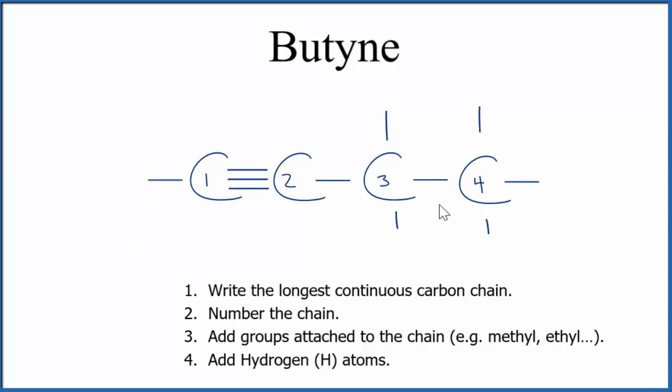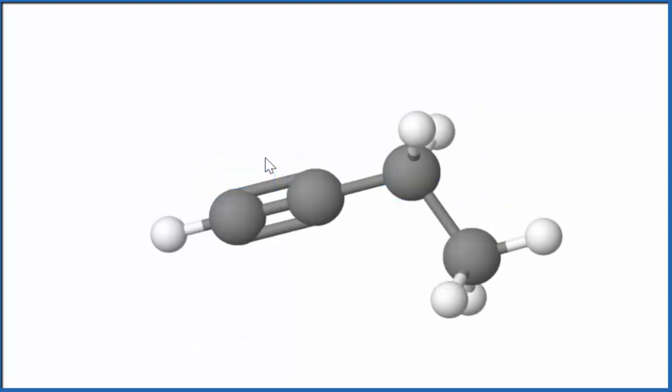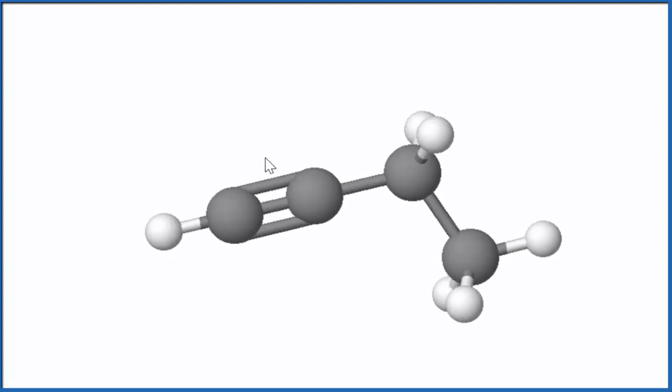This is just called normal butyne or 1-butyne because the triple bond's on the first carbon here. Let's look at this in three dimensions. So we have our triple bond here. We have one, two, three, four carbon atoms. And you can see it's linear across the triple bond. The carbon here, the third carbon, that would have the tetrahedral molecular geometry for that.